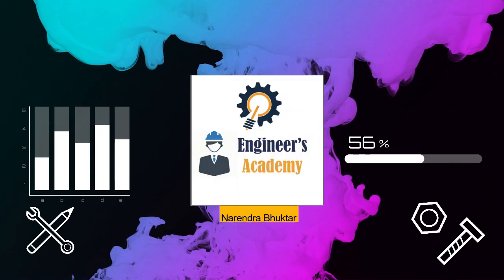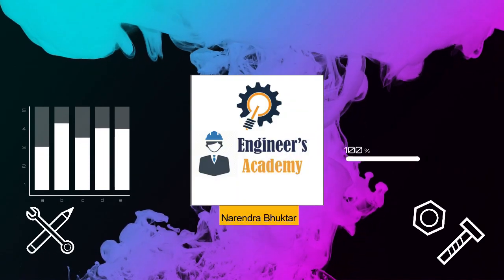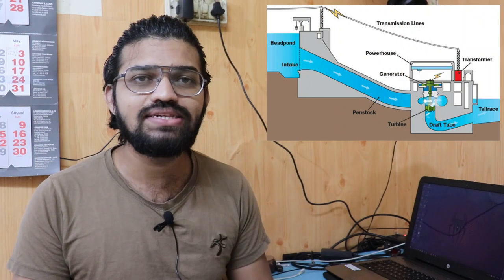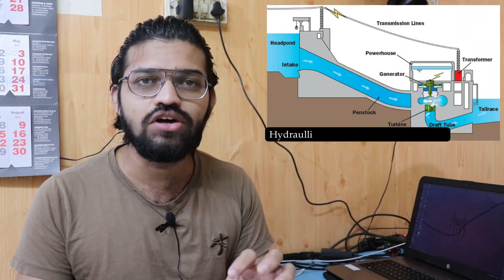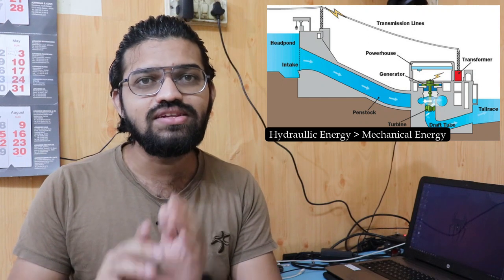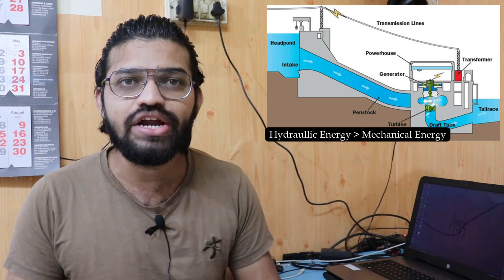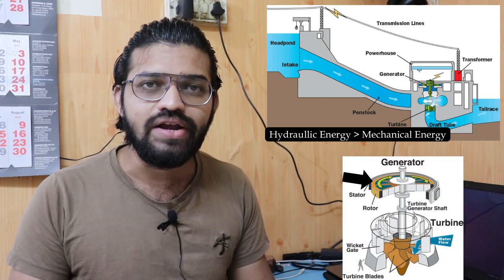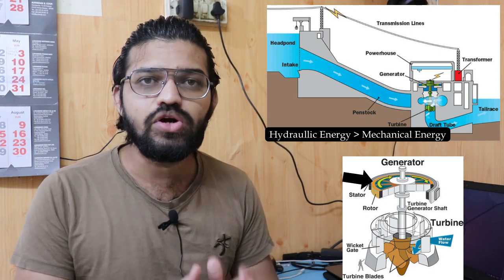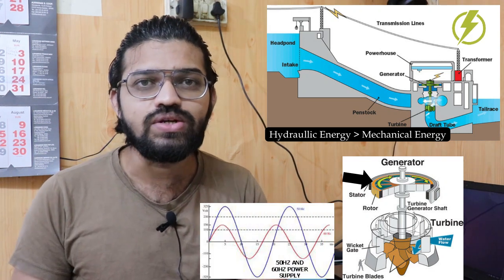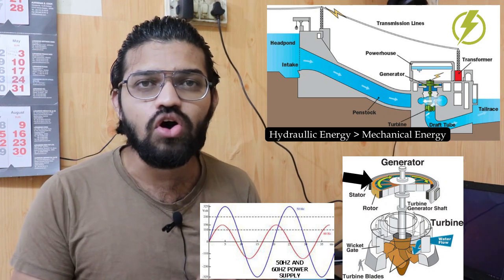First of all, let us understand what is the exact meaning of governing and why we need to govern turbines. Hydraulic turbines are hydraulic machines that convert hydraulic energy into mechanical energy, and this mechanical energy is then converted into electrical energy by means of a generator, which is coupled to the turbine. This generator produces electricity at a certain frequency.